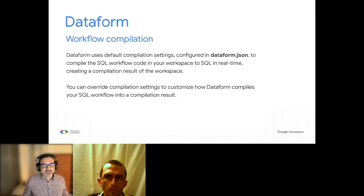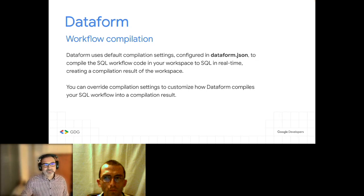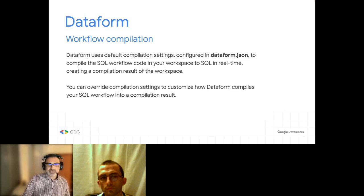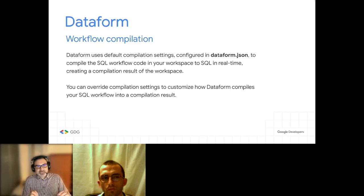Once your files are ready, you need to compile them. Dataform takes compilation settings from a config file, compiles each file to SQL, and produces a compilation result. One thing you can do is override the compilation settings in dataform.json, which allows you to separate your development environment from production — you just specify a different project for production, override the settings, and generate a different compilation result.